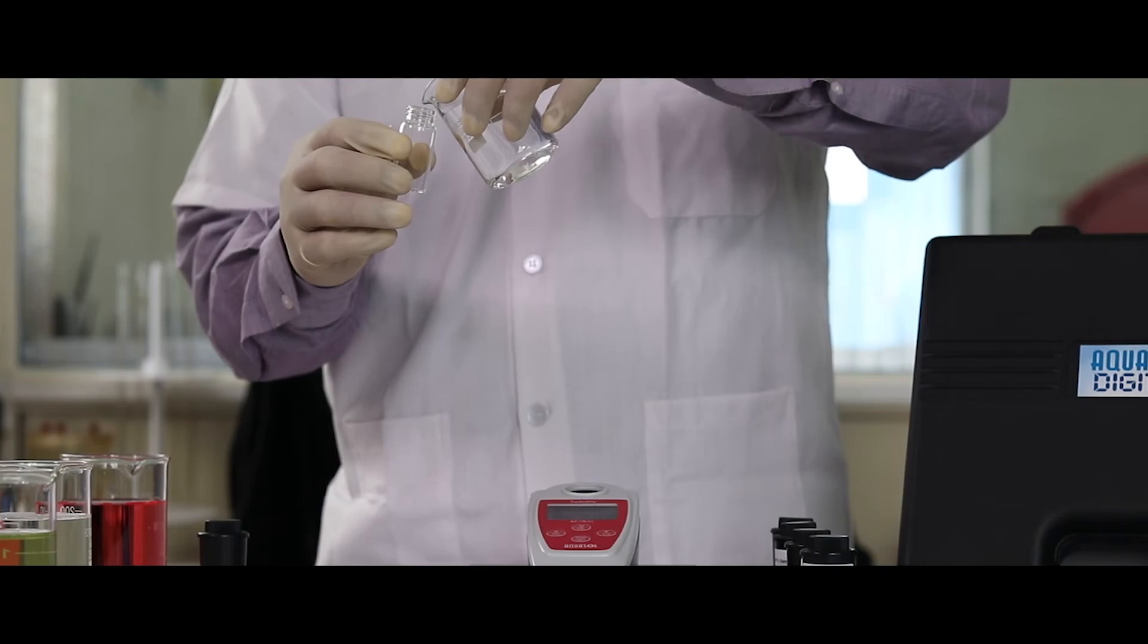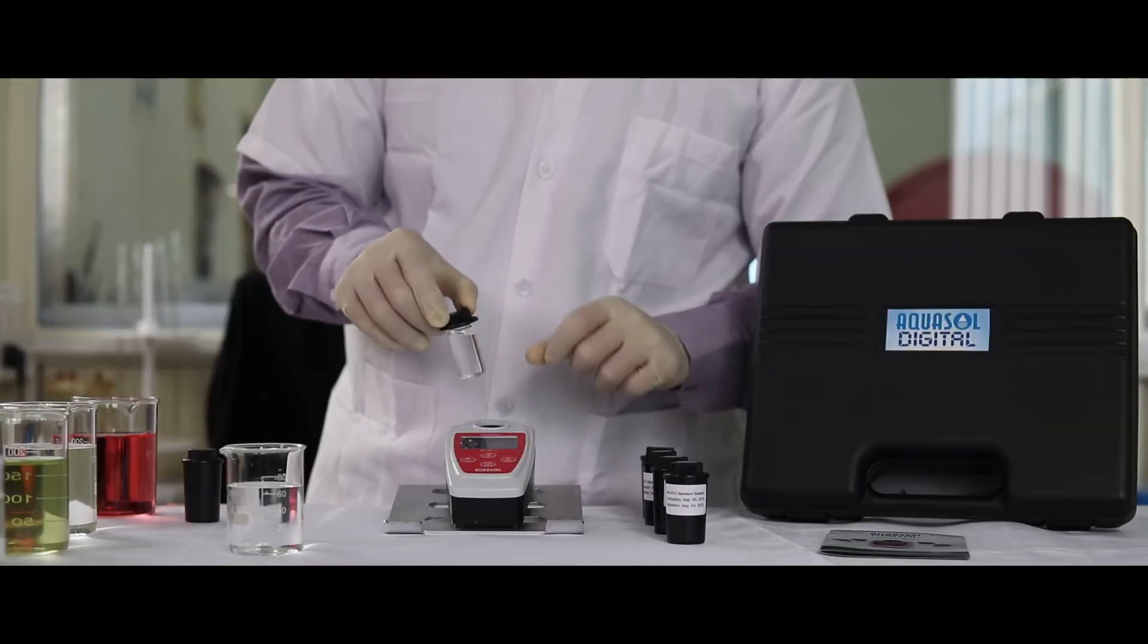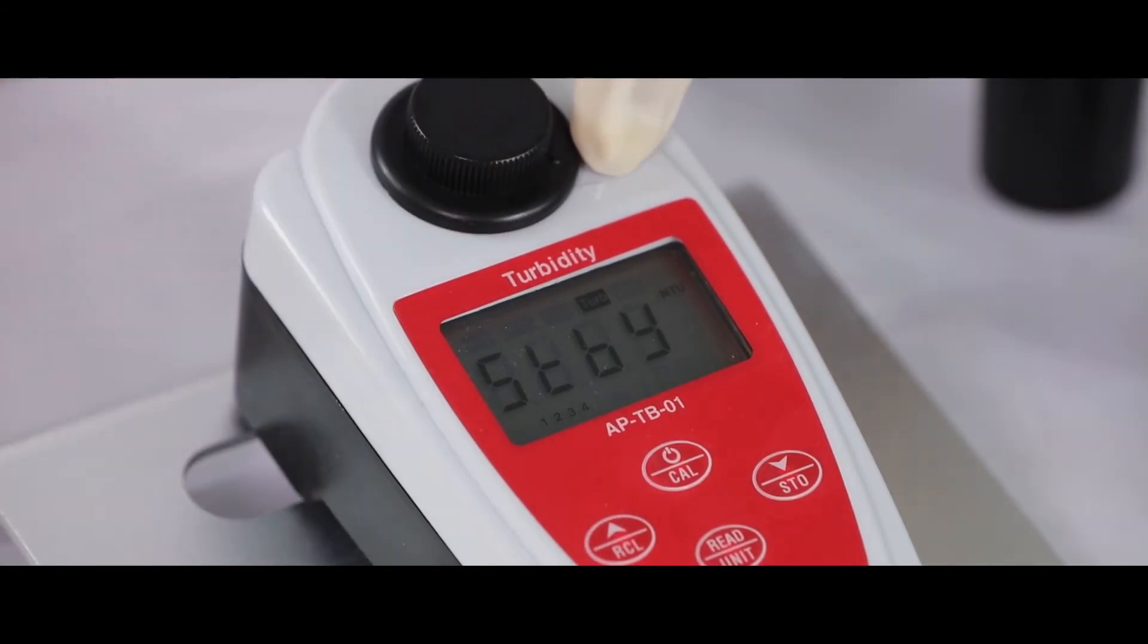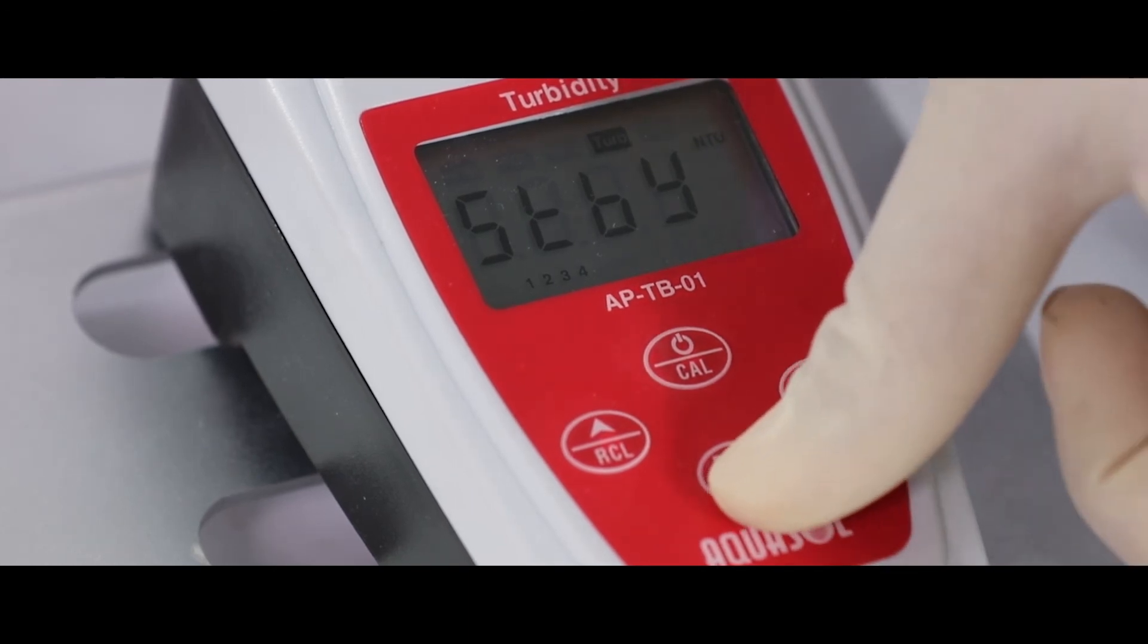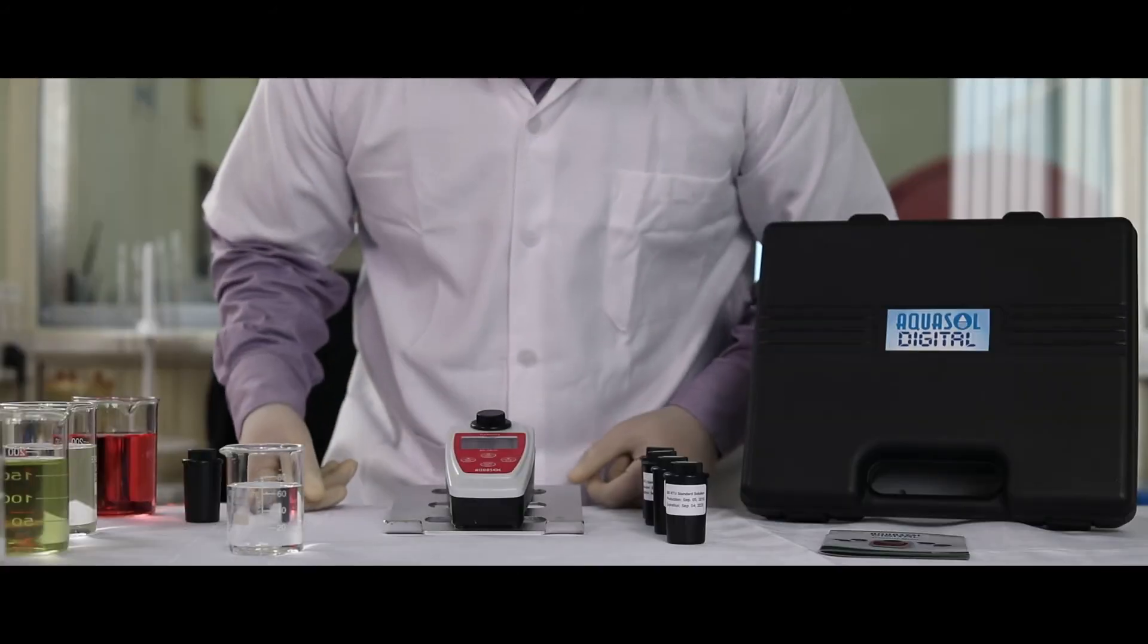To check the reading of a sample, fill the sample into the glass bottle. Place the bottle in the meter, make sure the notch matches, and then press the read key for the value of the solution. To store the reading, press the STO key on the meter.